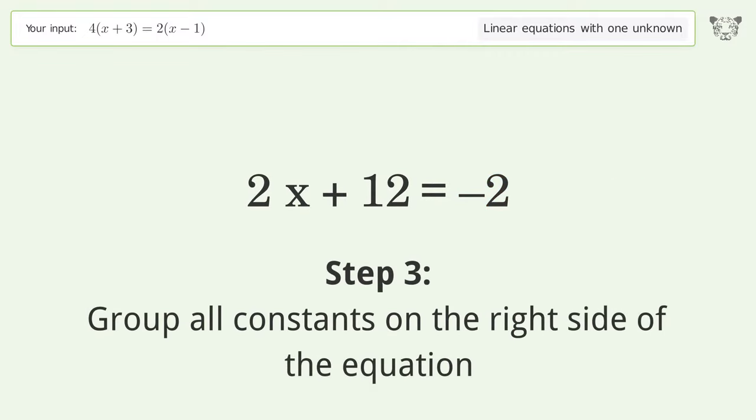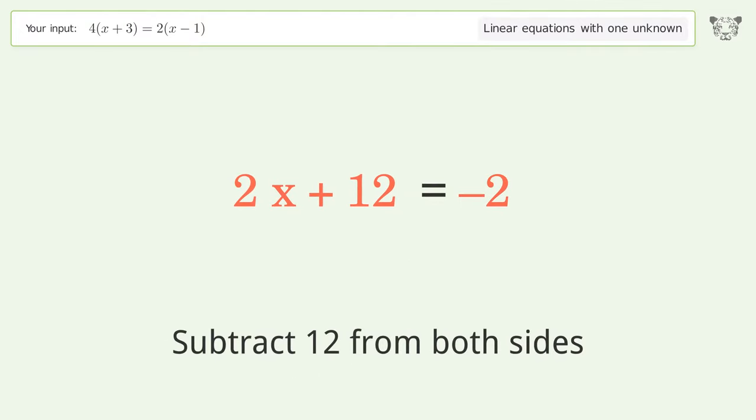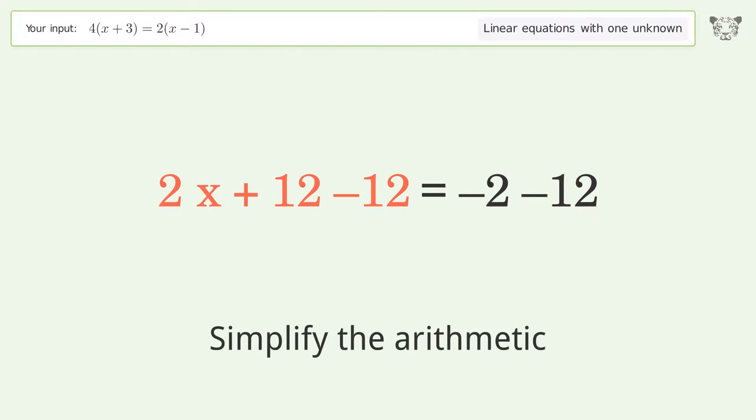Group all constants on the right side of the equation. Subtract 12 from both sides. Simplify the arithmetic.